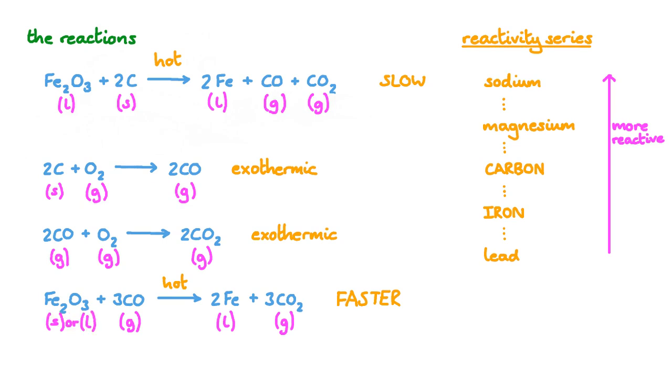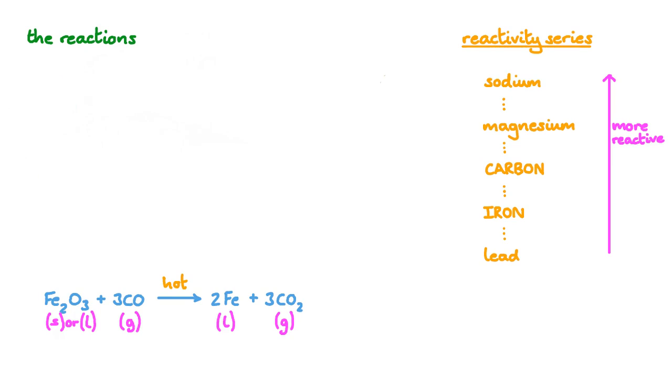In the blast furnace, where this reaction happens, the hematite may actually still be solid, but the iron we get out at the end will definitely be a liquid. The most important reaction to remember here is the reaction between hematite and carbon monoxide. The reaction between hematite and carbon does occur, but much less so.